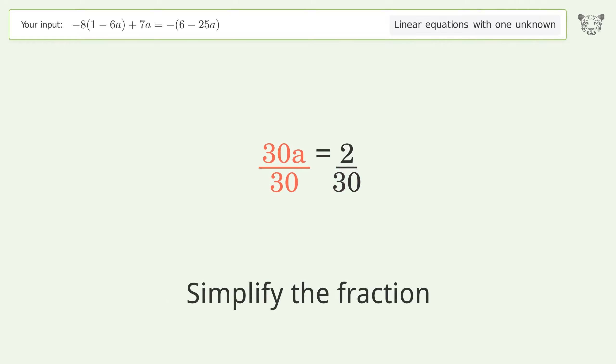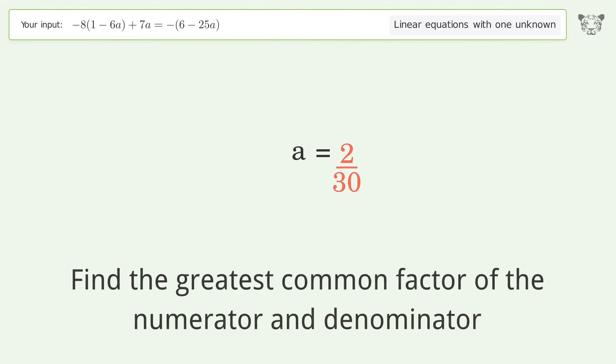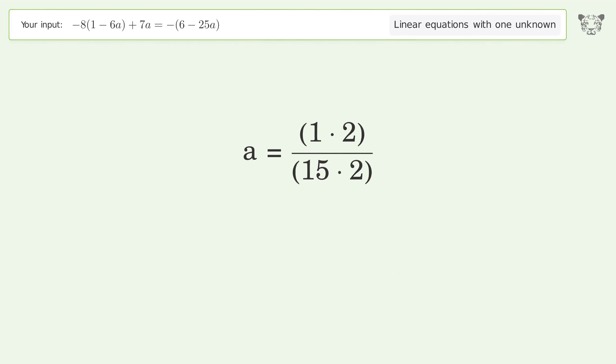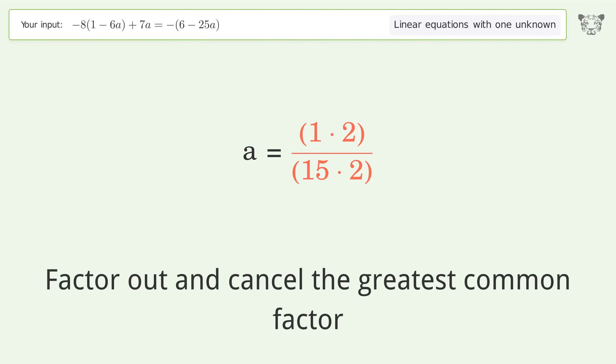Simplify the fraction. Find the greatest common factor of the numerator and denominator. Factor out and cancel the greatest common factor.